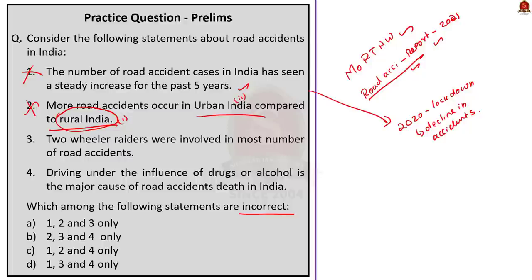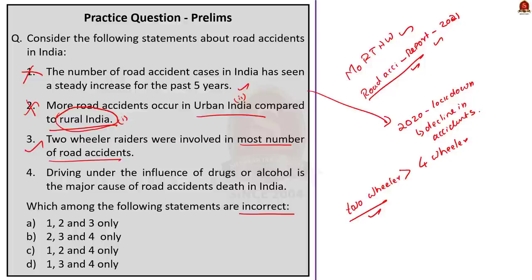Statement three — two-wheeler riders were involved in the most number of road accidents — is correct; since the number of two-wheelers in India is much greater than four-wheelers, two-wheeler riders are most involved in accidents. Statement four — driving under the influence of drugs or alcohol is the major cause of road accident deaths in India — is incorrect; according to the report, over-speeding is the major reason for road accidents in India, not alcohol. So, statements one, two, and four are incorrect, and the correct answer is option C — 1, 2, and 4.